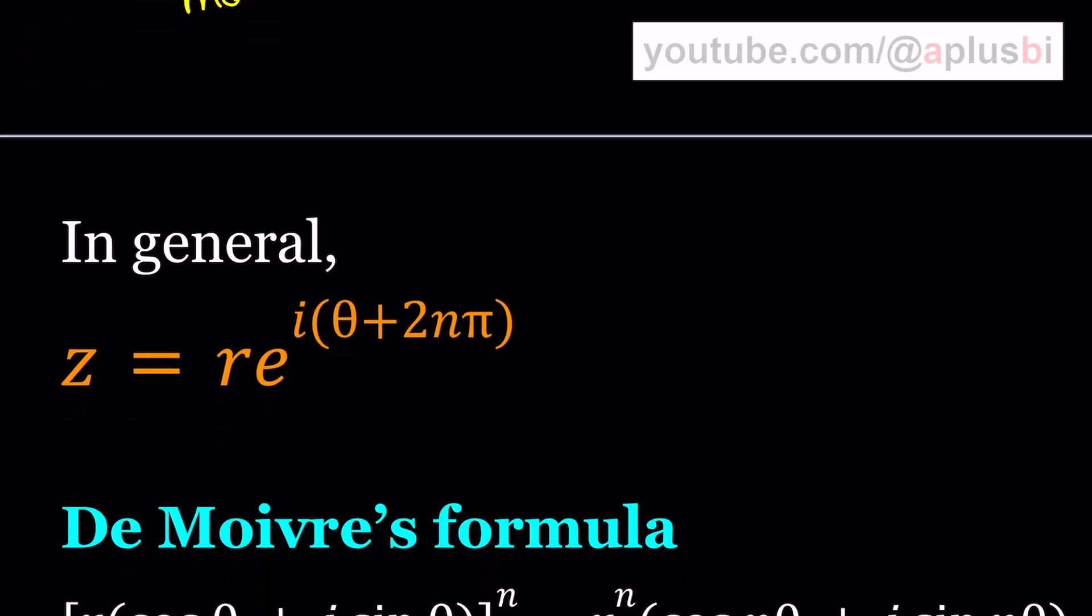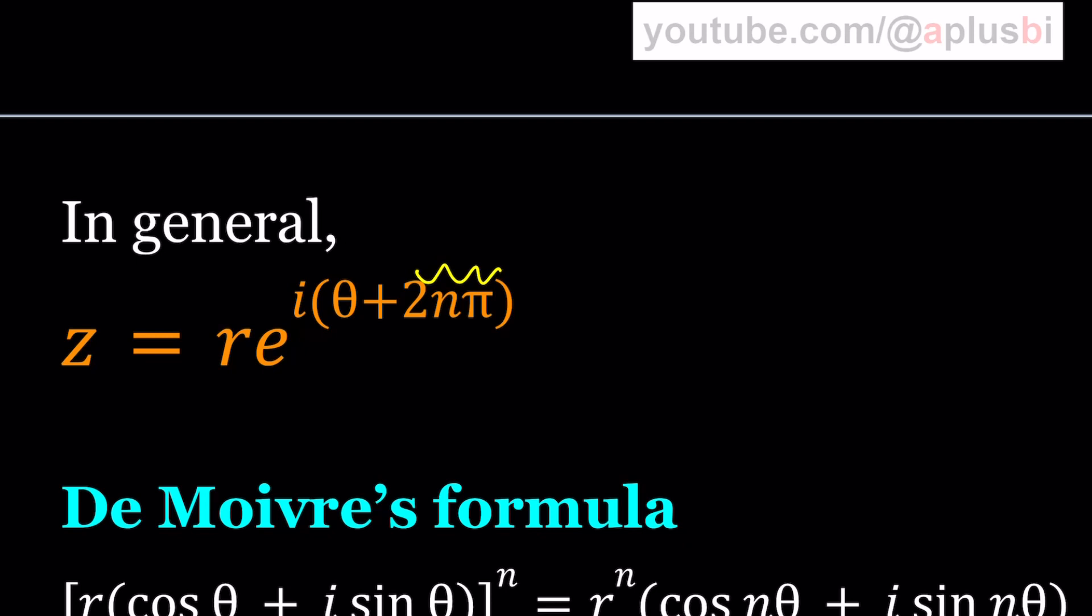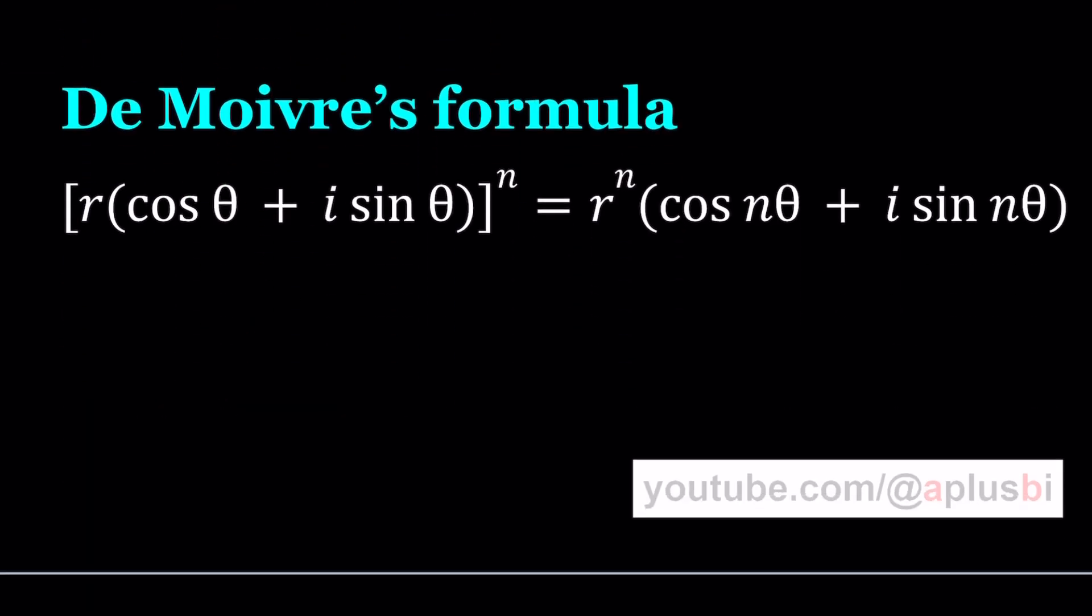In general we can write it this way because you're allowed to add multiples of 2 pi. De Moivre's formula basically allows us, and by the way n needs to be an integer here, allows us to raise a complex number in polar form to a power. You could do that by raising r to the nth power and multiplying the argument by n. You can go ahead and test it out with 1 plus i raised to the power 100.